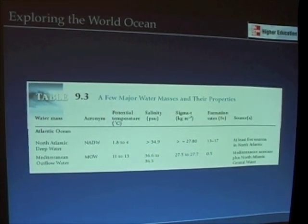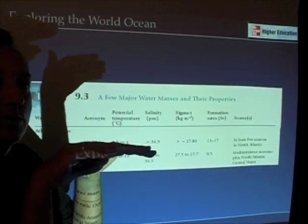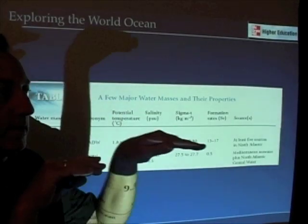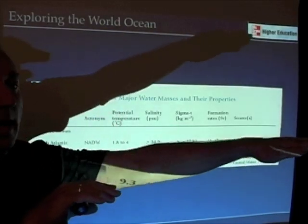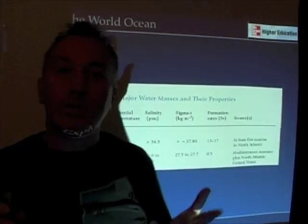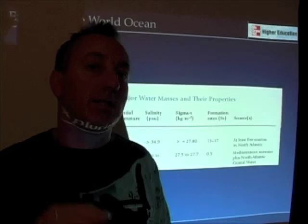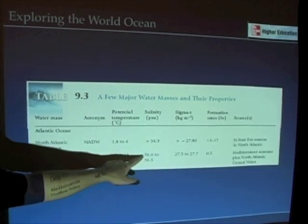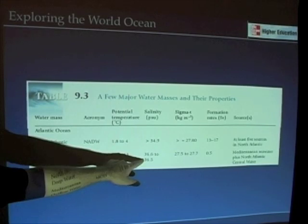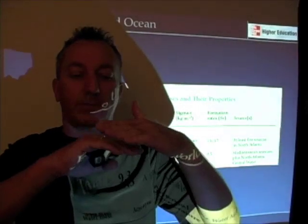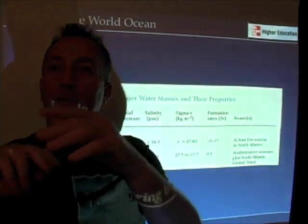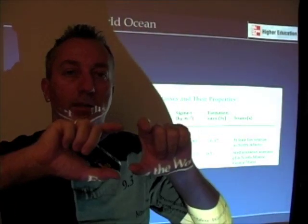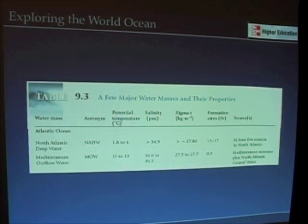Another interesting water mass, produced in much smaller quantities, is something called Mediterranean outflow water. At the Straits of Gibraltar, water comes over the sill and heads out at intermediate depths from the Mediterranean Sea out into the middle of the Atlantic Ocean. It's a curious thing, because when you're in the middle of the Atlantic Ocean and you lower a CTD, you'll hit water that's fairly warm — 11 to 13 degrees centigrade — and extremely salty, 36.5 to 36.6 parts per thousand. It's a very narrow range of depth; you just hit it and it's always there, spreading out at a very narrow range of depths across the Atlantic Ocean.